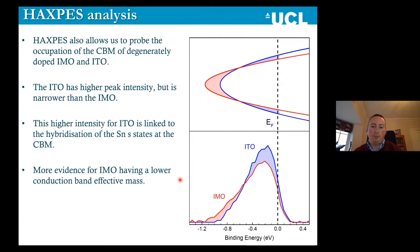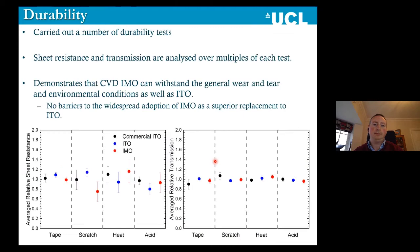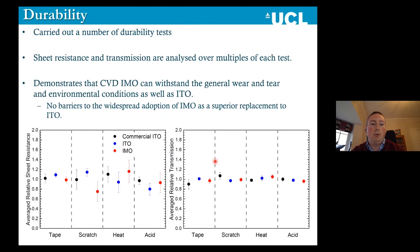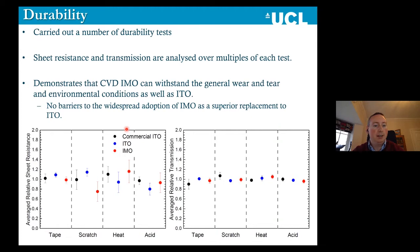The higher intensity for ITO is linked to the hybridisation of tin S-states to the bottom of the conduction band. We then carried out a number of durability tests, looking at sheet resistance and transmission over multiple test cycles. CVD-grown IMO can basically withstand the same general wear and tear and environmental conditions as ITO with basically the same performance. From our point of view, there are no barriers to the widespread adoption of IMO as a superior replacement to ITO.